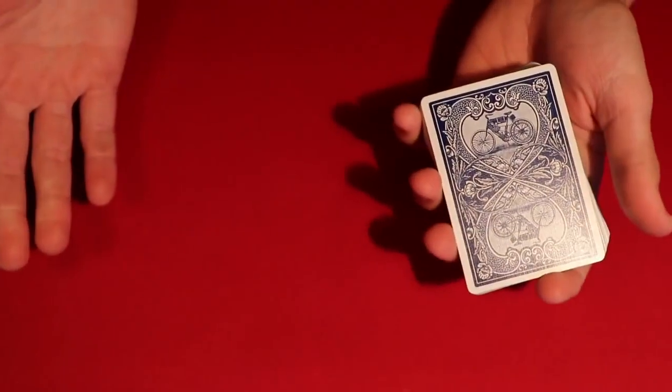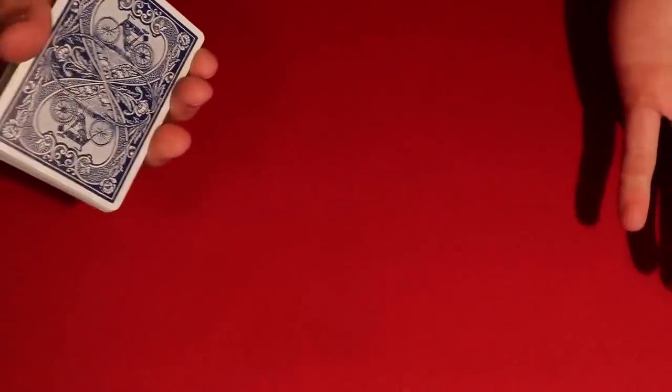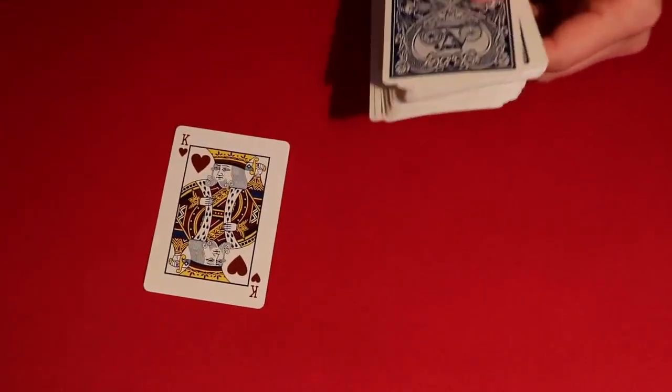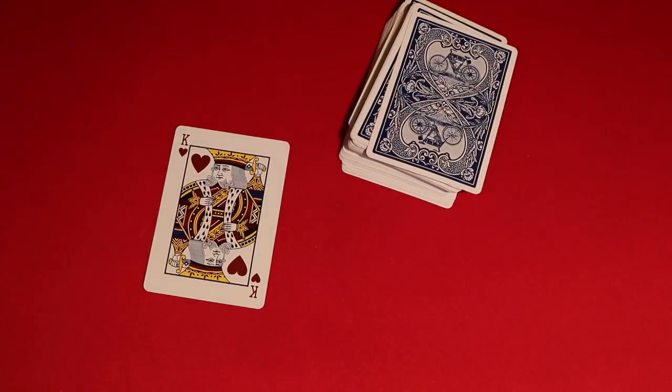All right, so after all this shuffling you tell your spectator, okay I have no idea where your card is. I have no breaks, right? So you go ahead and say, all right, go ahead and tell me when to stop for another time. Let's say the spectator goes through, they say stop right around here. You take the card out and this should be the spectator's chosen card. And that is the trick, and then I'll show you guys how to do it.